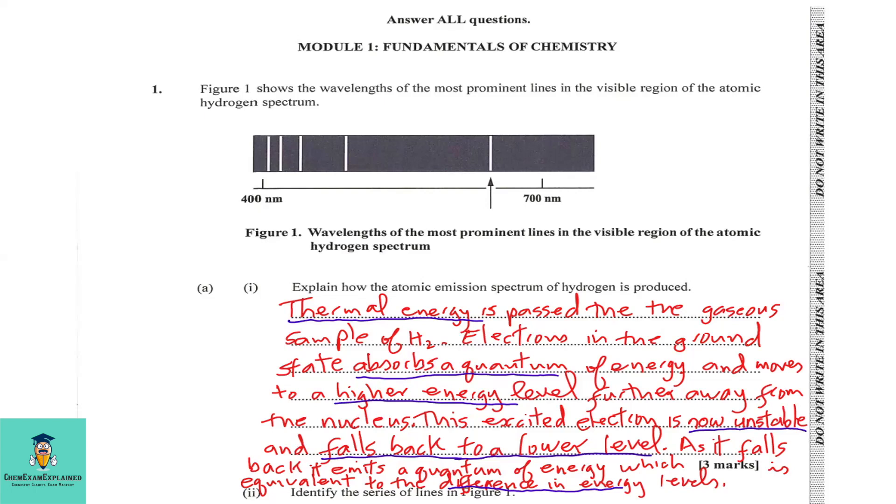Thermal energy is passed through the gaseous sample of hydrogen. Electrons in the ground state absorb a quantum of energy and move to a higher energy level, farther away from the nucleus.